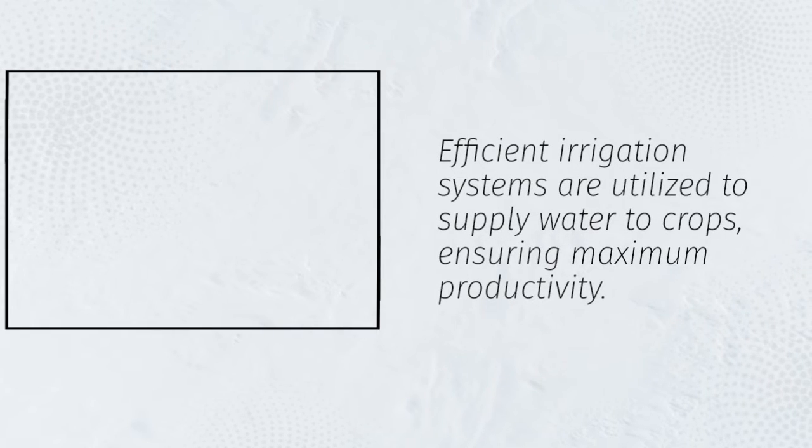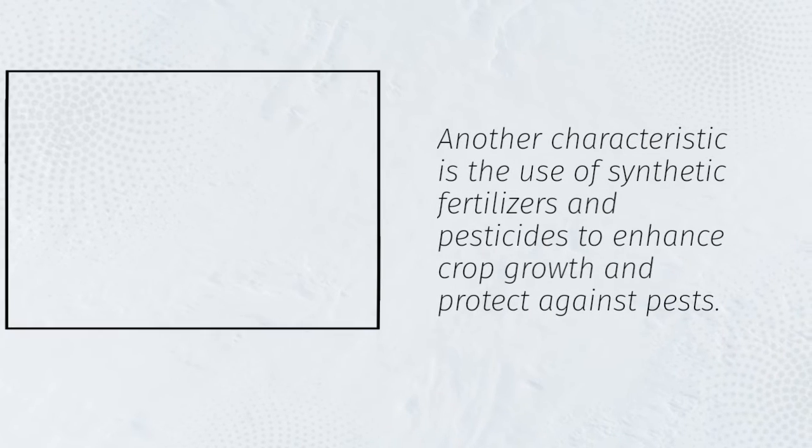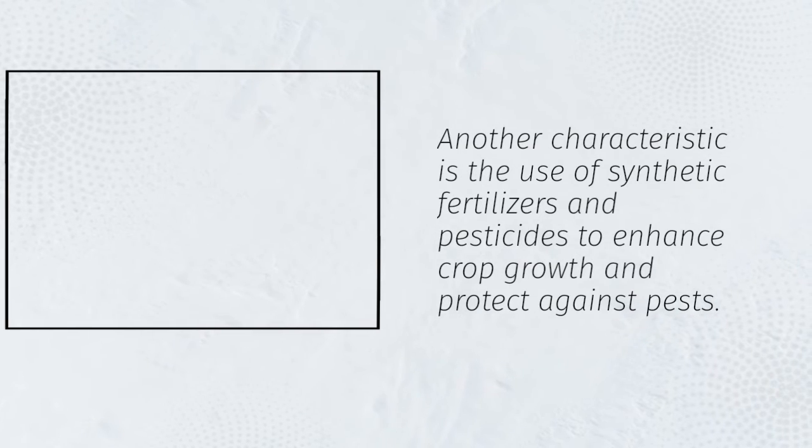Efficient irrigation systems are utilized to supply water to crops, ensuring maximum productivity. Another characteristic is the use of synthetic fertilizers and pesticides to enhance crop growth and protect against pests.